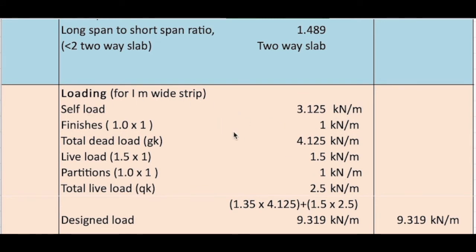For the loading arrangements, we can calculate this using computer packages, SAP 2000. I did it manually. Self-weight 3.125, finishes 1, so the total dead load will be 4.125. Live load 1.5. This is a residential house.